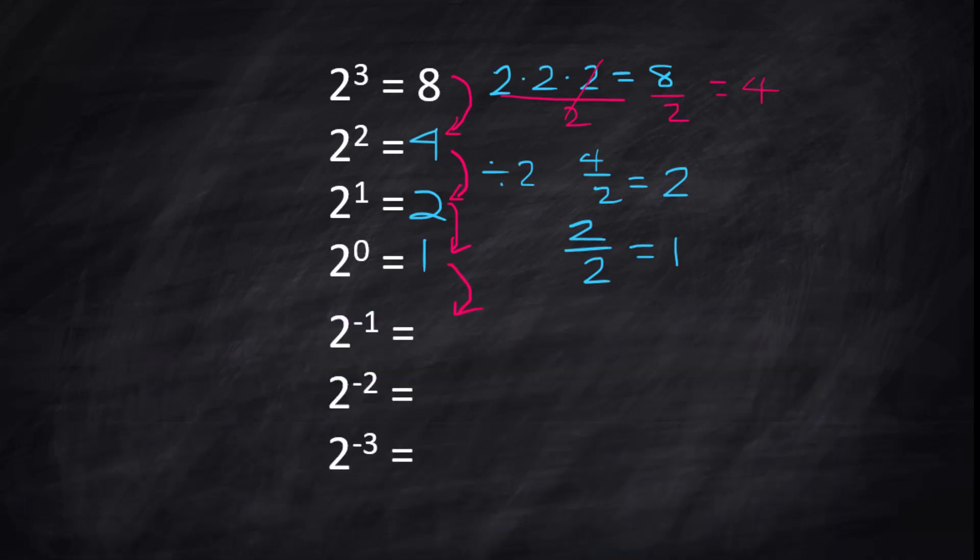Now to go negative, follow the same pattern. Take this 1, and you are going to divide it by 2. So that gives you 1 half.